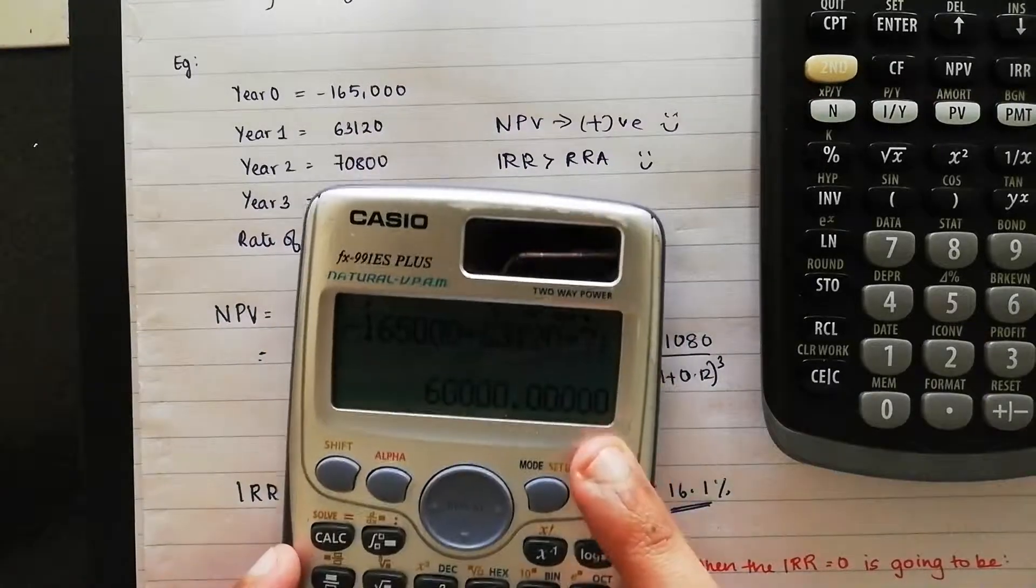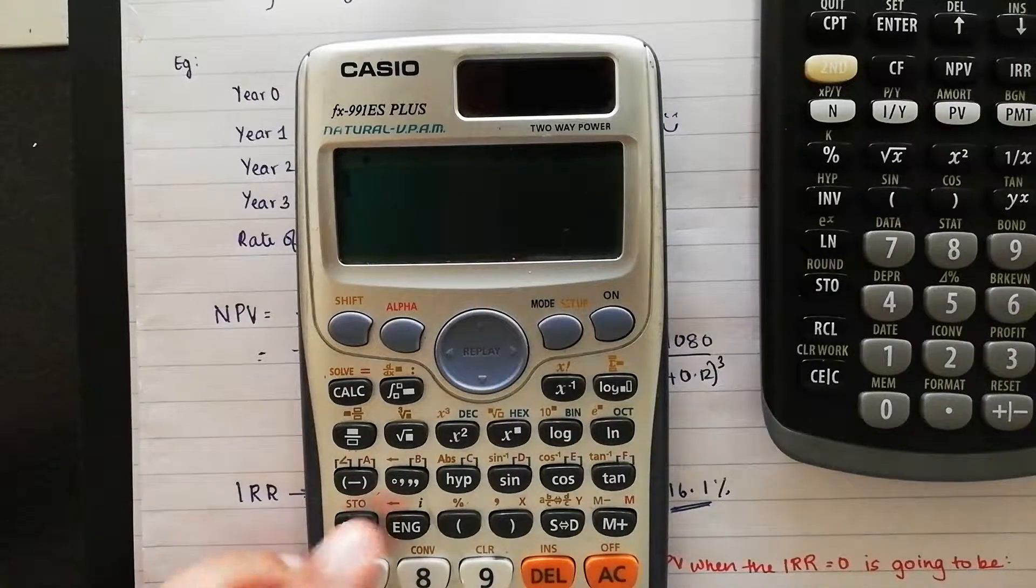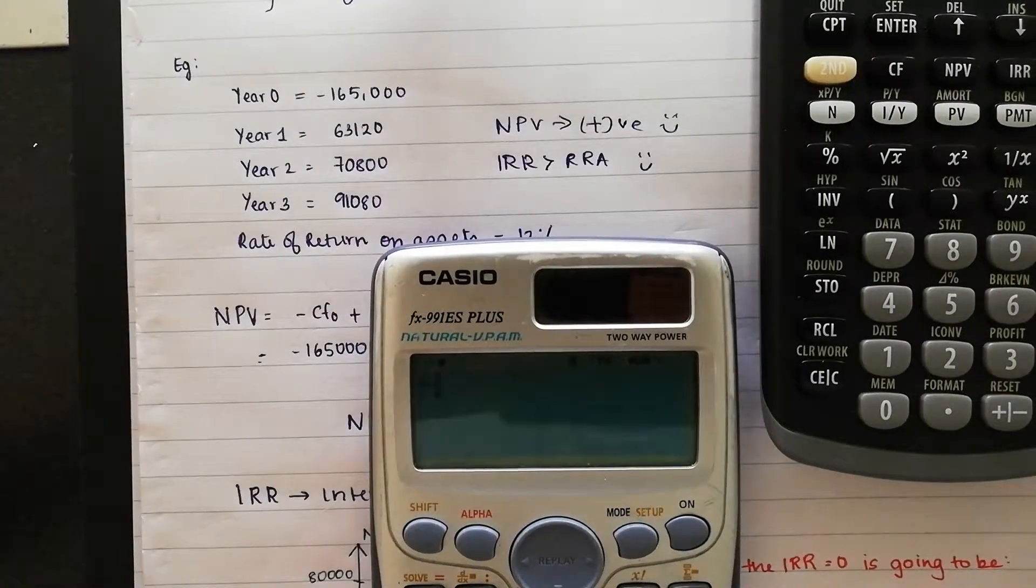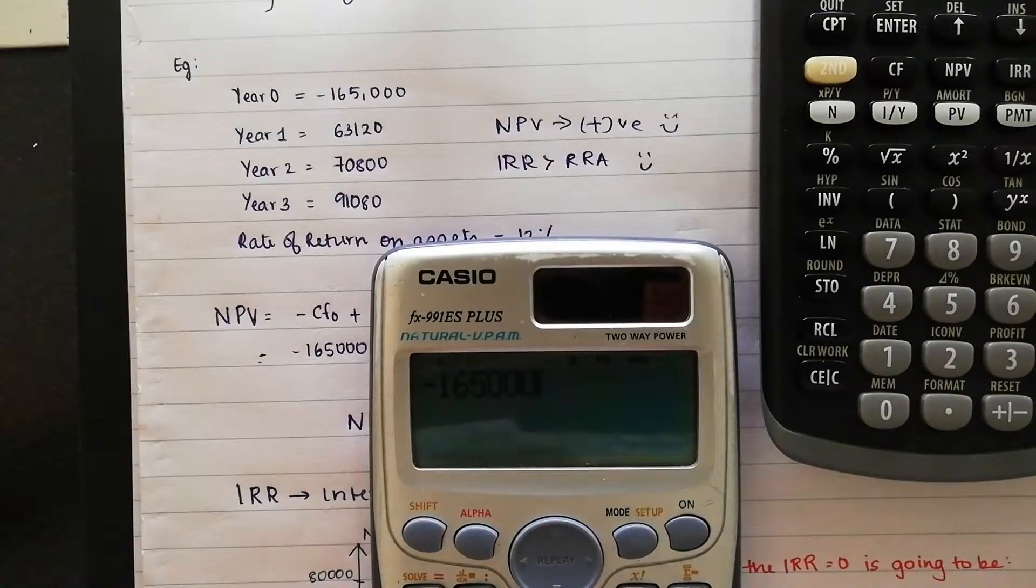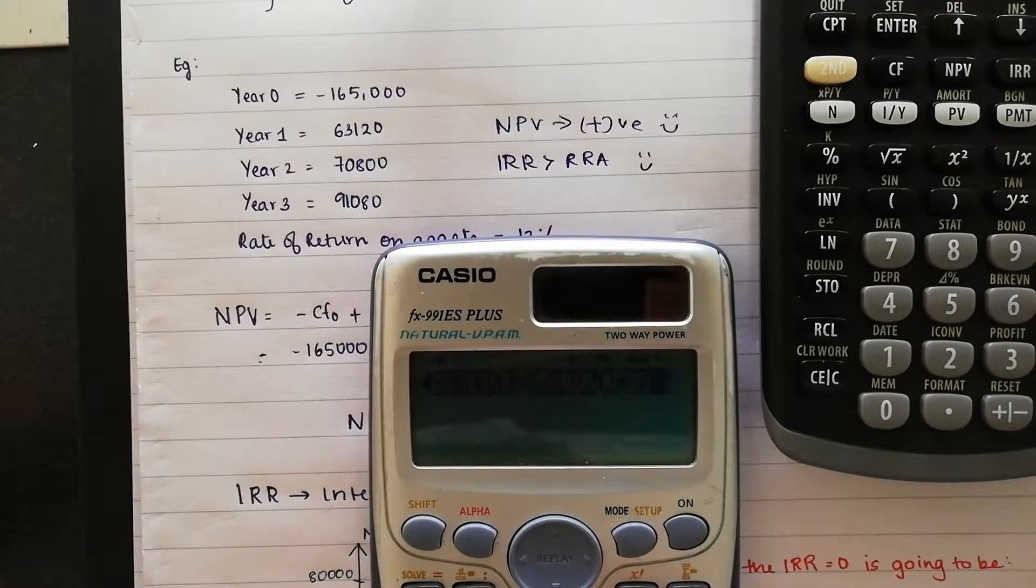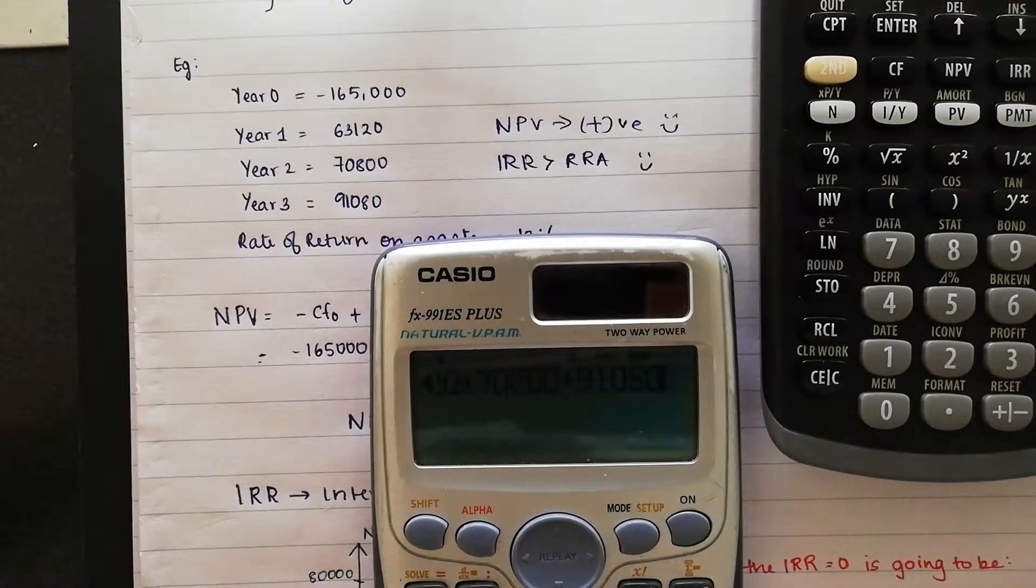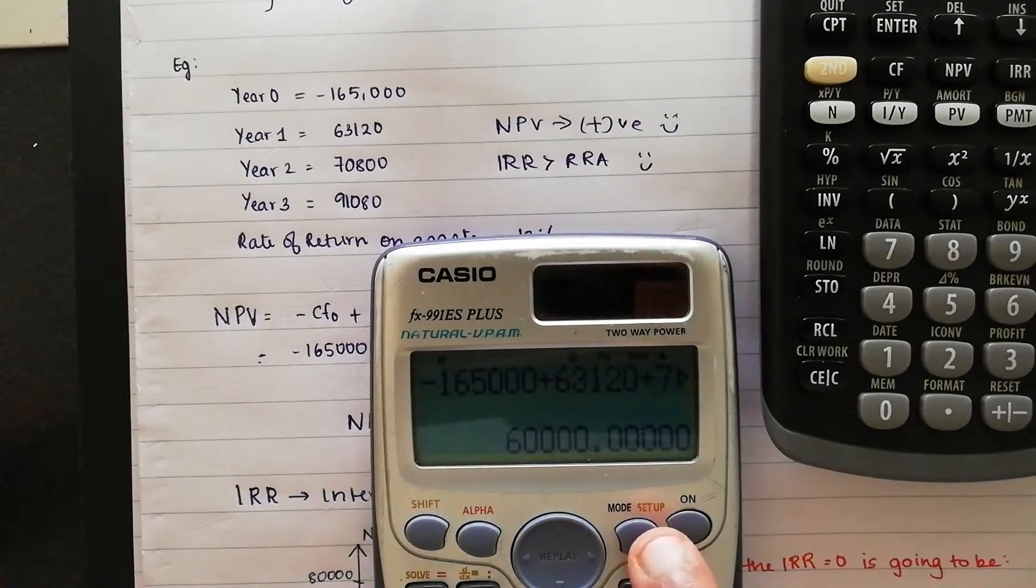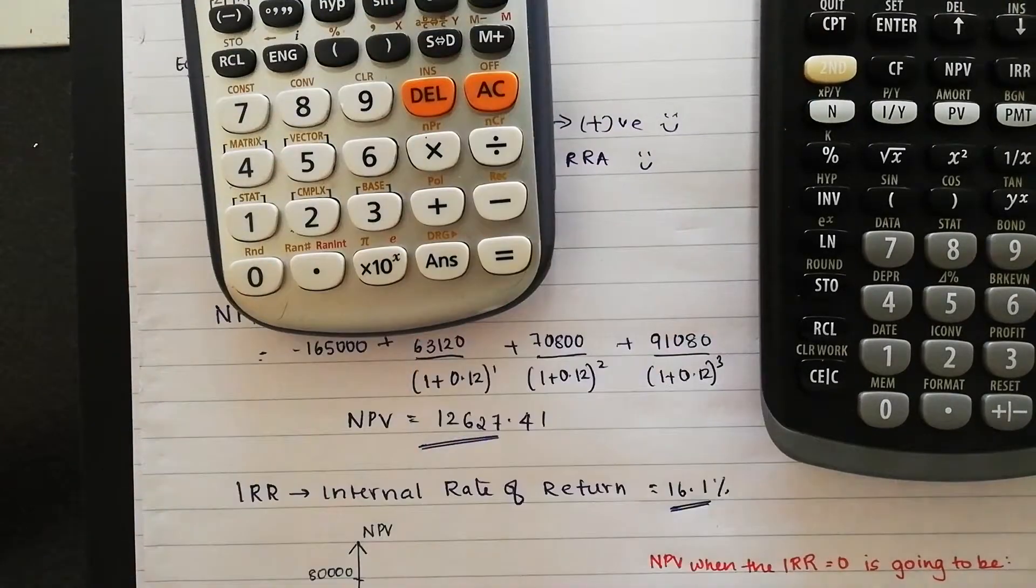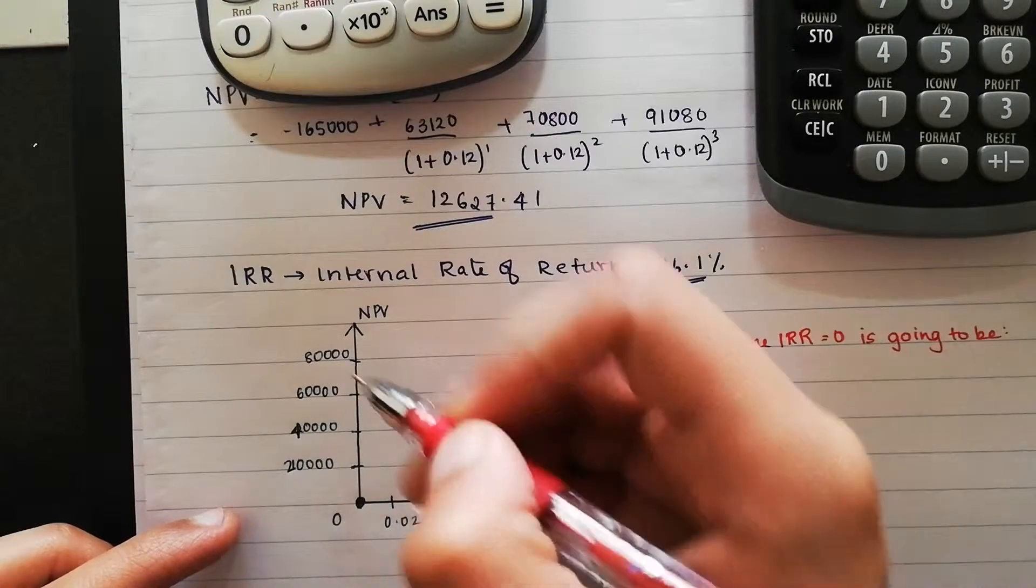that's going to be negative 165,000 plus 63,120 plus 70,800 plus 91,080. We've got 60,000. If you look at our graph here, we have 60,000 right over here.